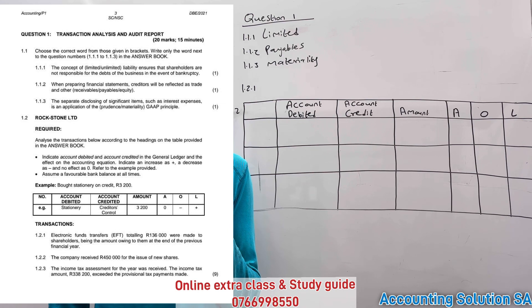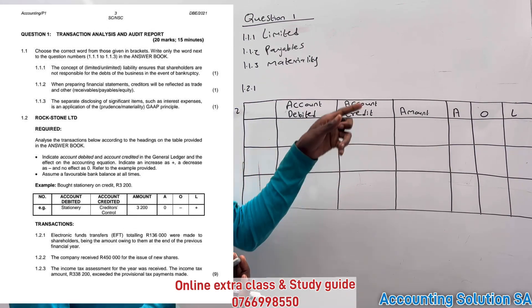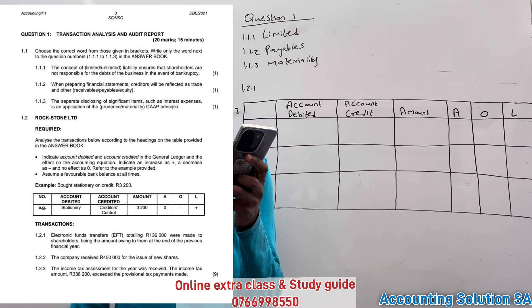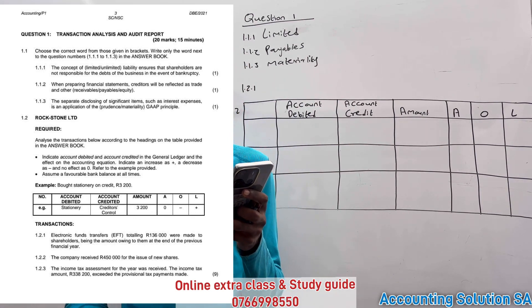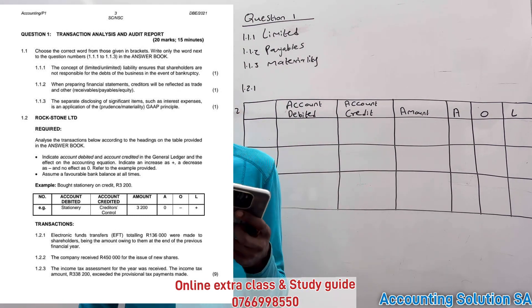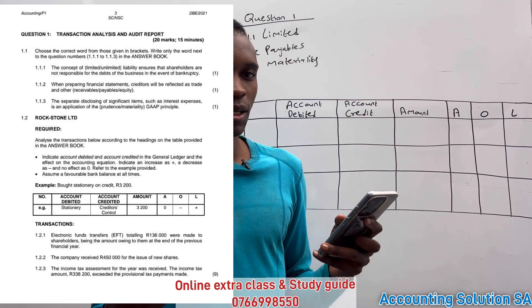Then we have 1.2, which requires us to analyze the transactions below according to the headings of the table provided in the answer book. They also give us an example: they bought stationery on credit for 3,200 — they debited stationery and credited creditors control. They indicated the amount and showed the sign under owner's equity because the scenario falls under owner's equity, and a plus under creditors control because it falls under liability.